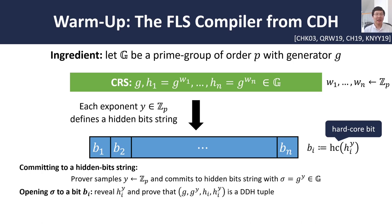What does a commitment look like? Well, the prover is essentially just going to compute g to the y. This will uniquely define the sequence of hidden bits because the value g^y information-theoretically determines the exponent y, and the exponent y completely determines the sequence of bits b₁ up to bₙ given the components in the common reference string. In order to open up a commitment, the prover will provide hᵢ^y, the term that will be used to derive the hidden bit.